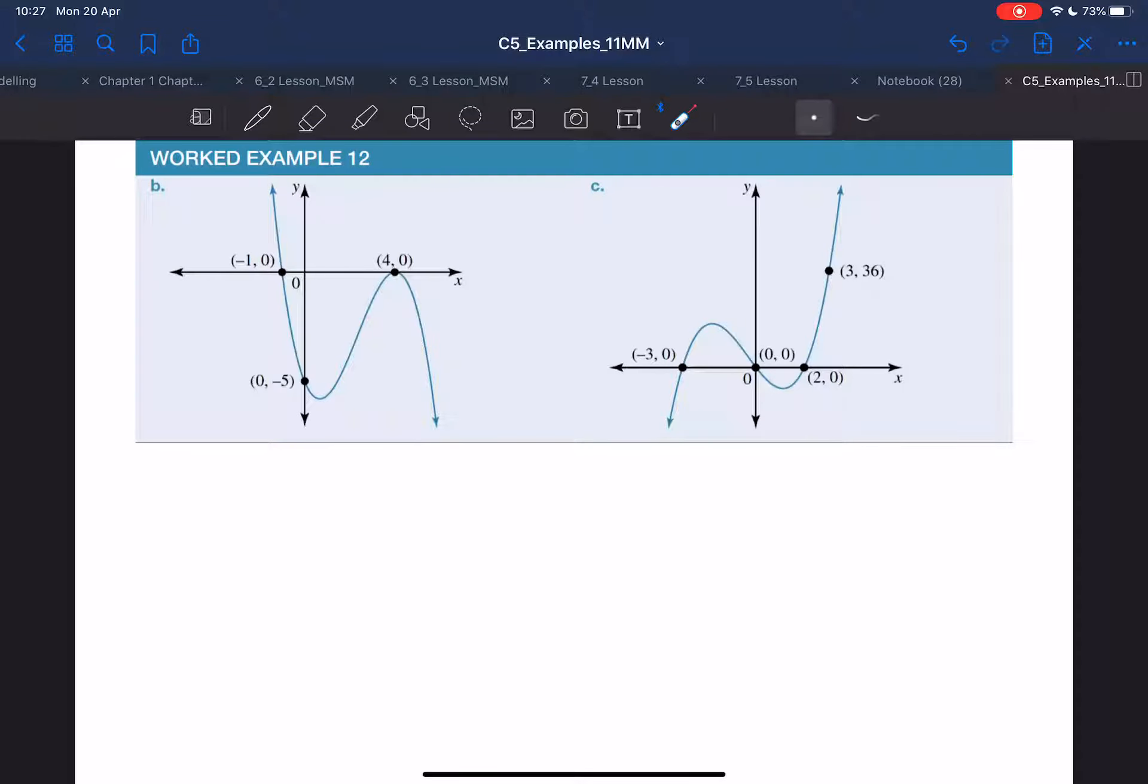To find the equation of this graph, I can see I'm going to have two values. So I'm going to go to y equals a times x minus a value.